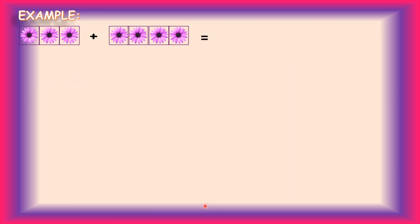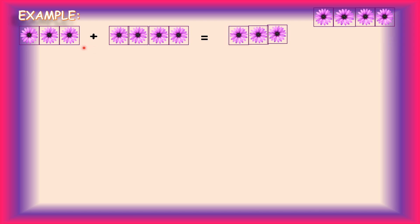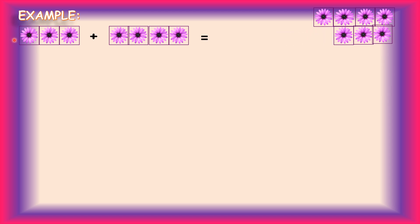Now let's take one example. On screen, you can see two sets of flowers. In the first set, you can see three flowers. In the second set, you can see four flowers. Between both the sets, you can see the plus sign. Plus signifies addition, and addition means bringing things together. So what are we going to bring together? We are going to bring these flowers together. Three flowers plus four flowers is equal to seven flowers.